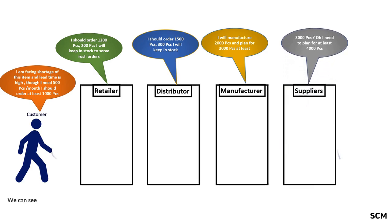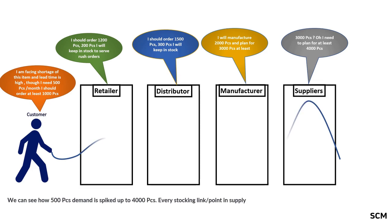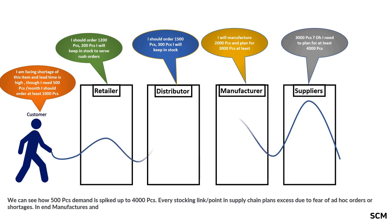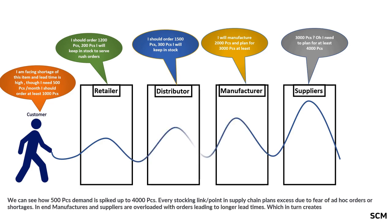We can see how a 500-piece demand is spiked up to 4,000 pieces. Every stocking link point in the supply chain plans excess due to fear of ad hoc orders or shortages. In the end, manufacturers and suppliers are overloaded with orders, leading to longer lead times, which in turn creates more havoc in further supply chain links, leading to panic ordering and creating the bullwhip effect.